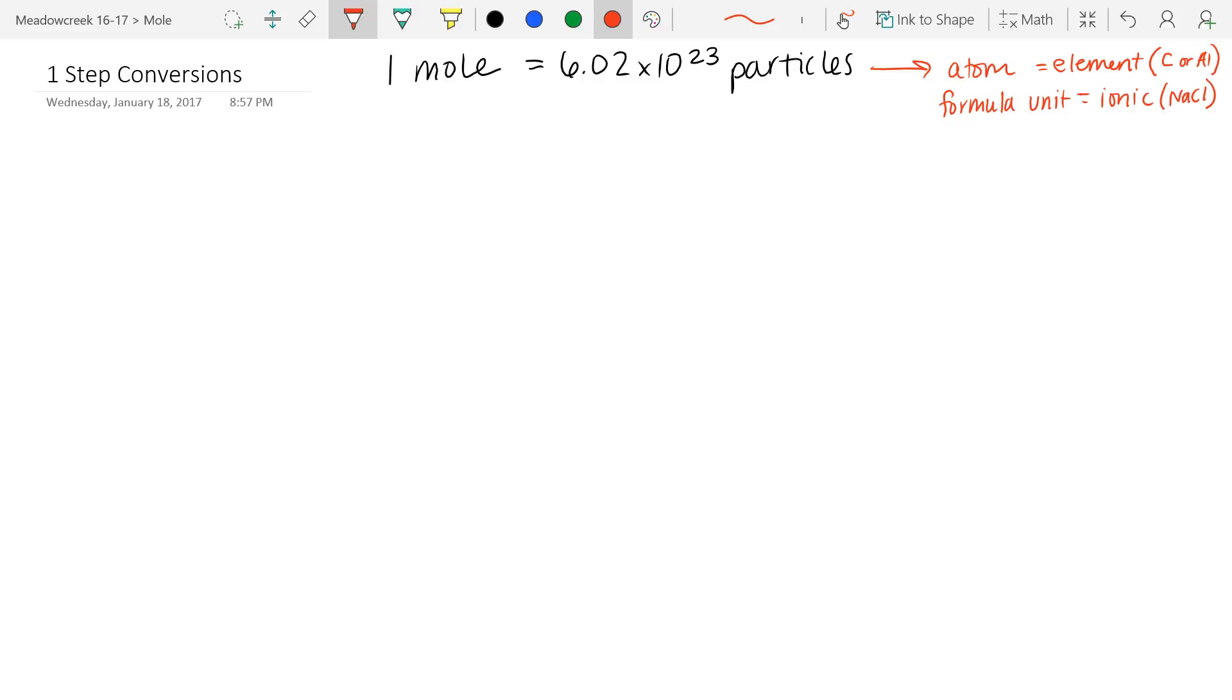Which we know is ionic because it has a metal in it. It could be talking about molecules, which is when we're talking about covalent compounds. For example, sugar or anything NO2. NO2 is both non-metals, so it's covalent. So all of these four words could be referencing particles. Particles just means things.